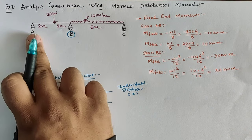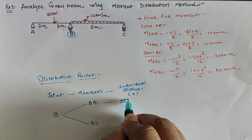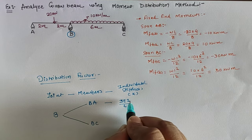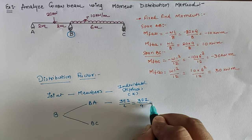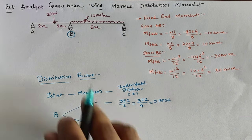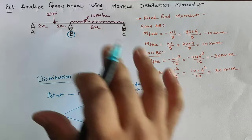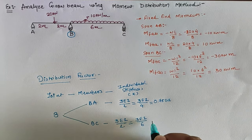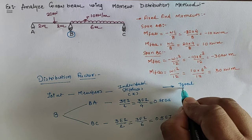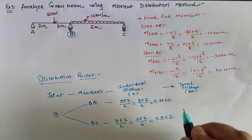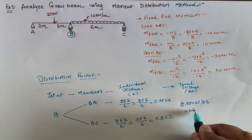For span BA, if we focus on support A it is a hinge or roller, so for the far-end hinge the stiffness is 3EI/L. That gives 3EI/4, which equals 0.75EI. For span BC, the far end is also a roller, so the stiffness is 3EI/L. With length 6 meters, that gives 3EI/6, equal to 0.5EI. The total stiffness sigma-k is 0.75 plus 0.5 EI, which equals 1.25EI.